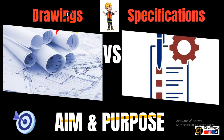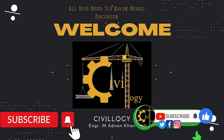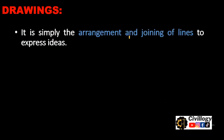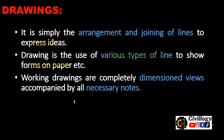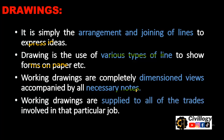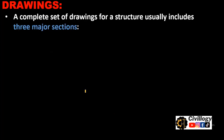You are requested to please watch that video as well to get a better understanding of the difference between drawings and specifications. First of all, drawings — it is simply the arrangement and joining of lines to express ideas. Drawing is the use of various types of line to show forms on paper. Working drawings are completely dimensioned views accompanied by all necessary notes. Working drawings are supplied to all the trades involved in that particular job.